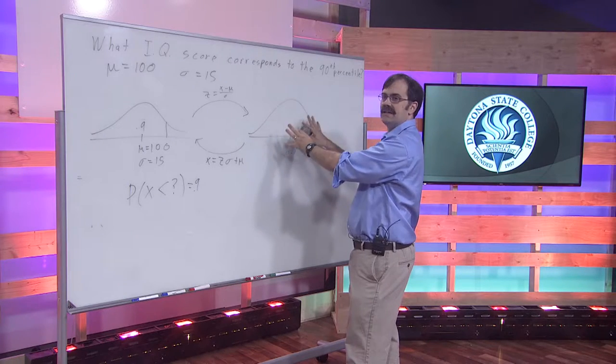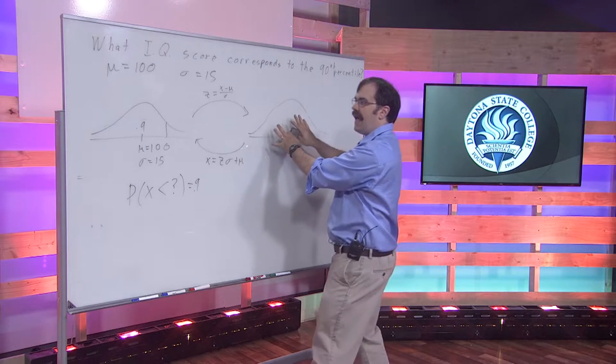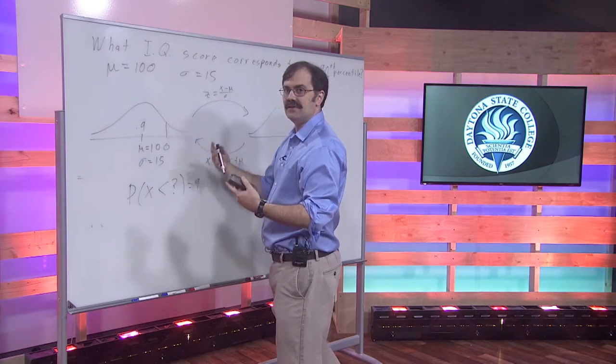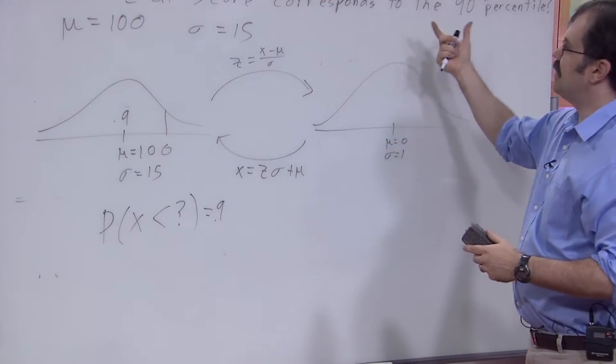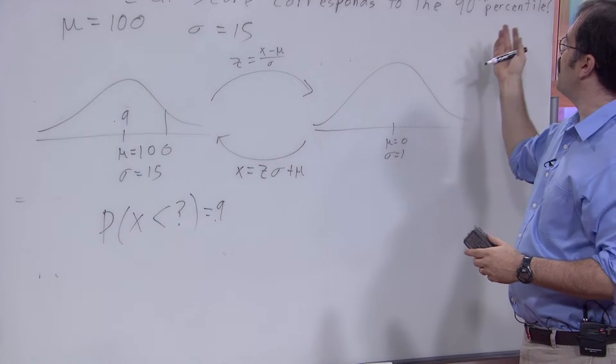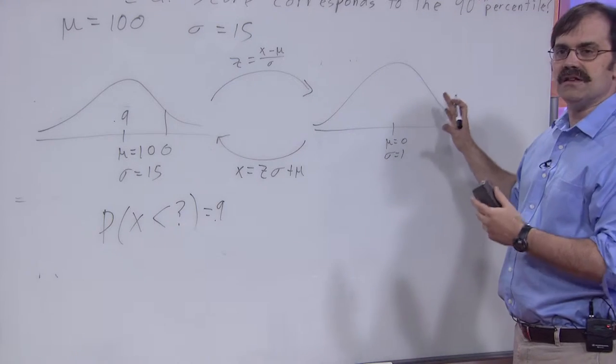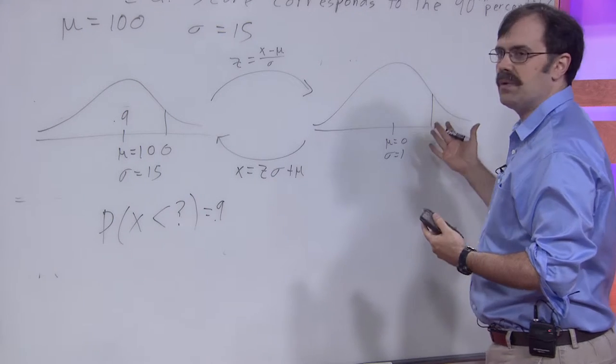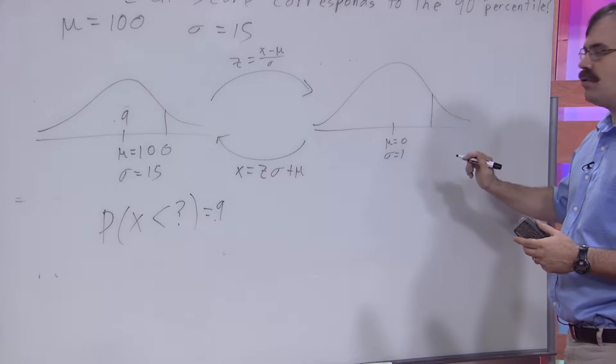Here, what we're going to do is we're going to take something with z-scores and convert it back into something with our x-values and find an IQ score that corresponds to the 90th percentile. So let's start off over here and try and figure out what we would do with the standard normal distribution.